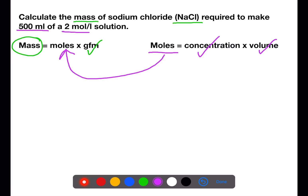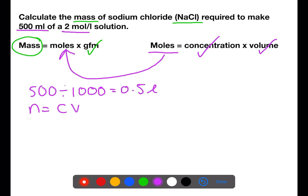So let's first calculate the moles. Volumes need to be in litres before we start, so we're going to take the 500 millilitres and divide by 1000 to get 0.5 litres. We then do moles equals concentration times volume, which is 2 times 0.5, so we're using one mole of solute.